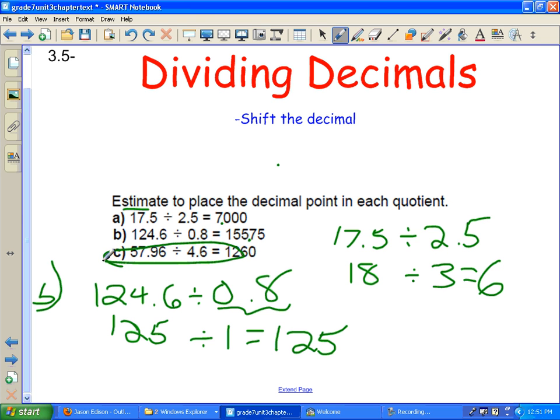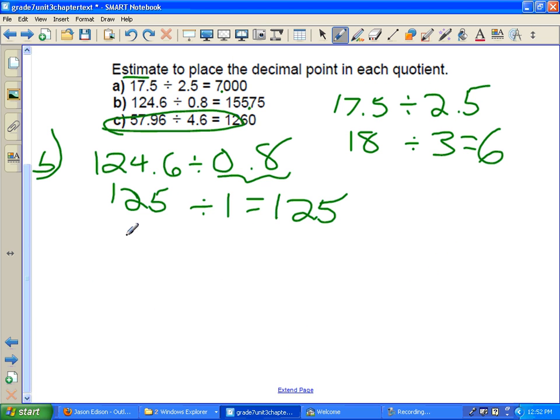This one here in C again, let's look at rounding it off. 57.96 rounded off will give us 58, and then 4.6 rounded off will give us 5. So how many 5s will we get out of that? We know 10 5s will give us 50, 11 5s will give us 55. So we'll get about 11 out of it, roughly.